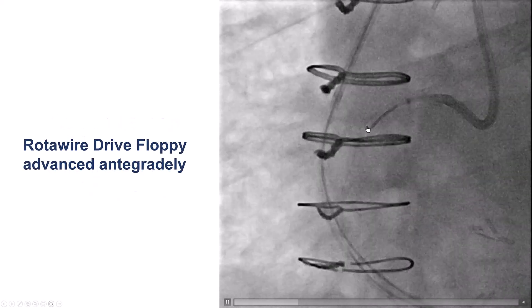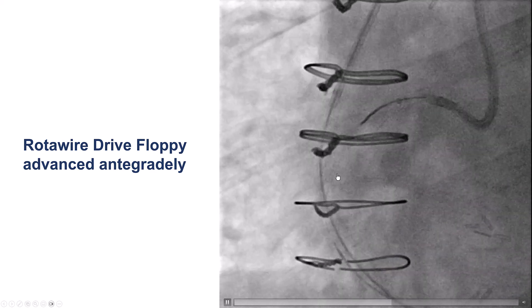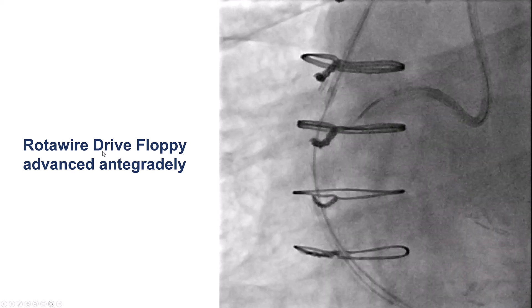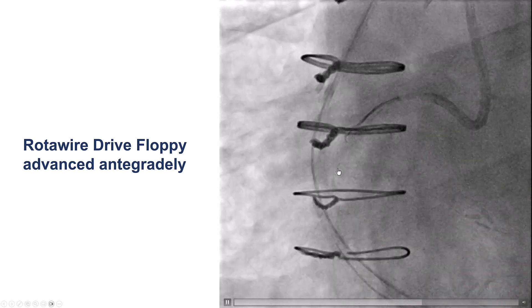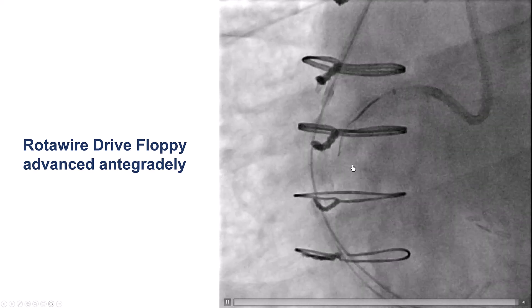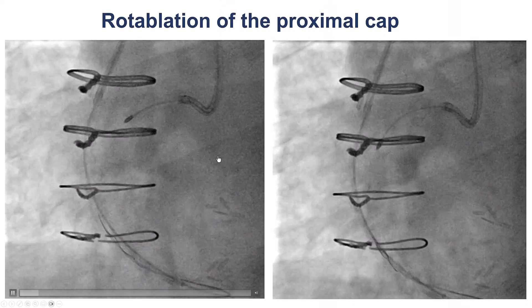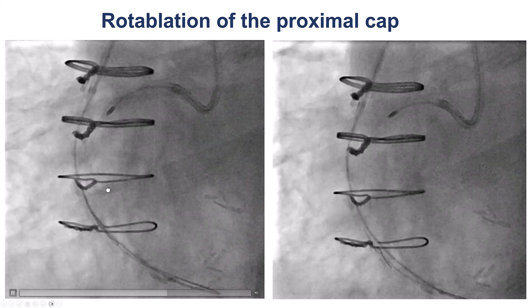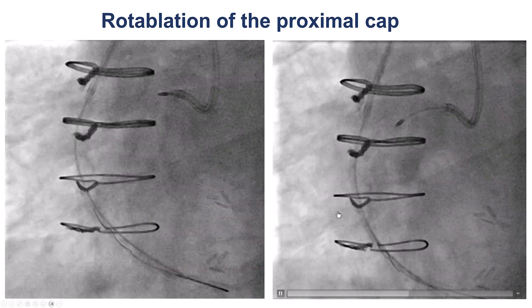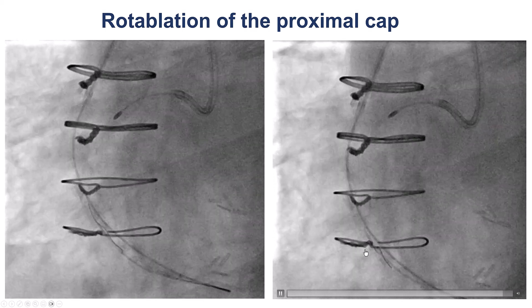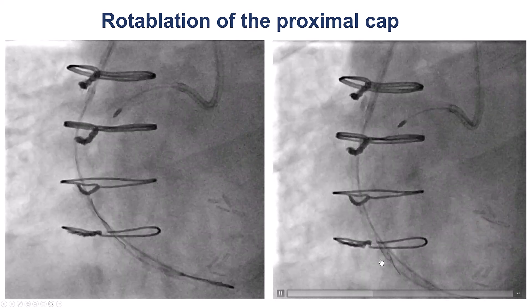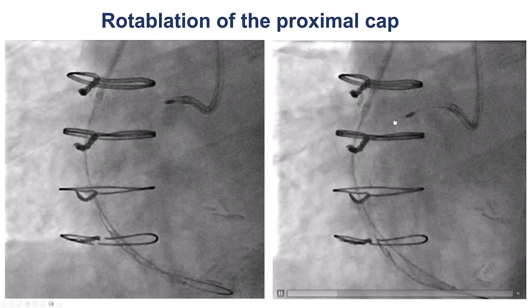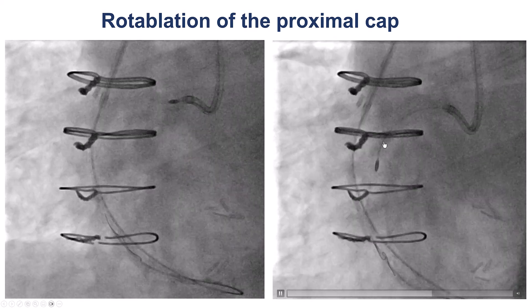The issue was clearly the severe calcium in the mid-RCA, so we decided to wire that segment using a Rotawire Drive Floppy. There was some difficulty, but the wire advanced down to the distal RCA. We then did a few rotablation runs to modify the proximal cap, being careful to stay away from the distal segment where the rotawire is 0.014 versus 0.009 for the rest of the wire. We were able to modify this segment of the right coronary artery.